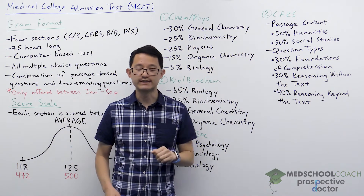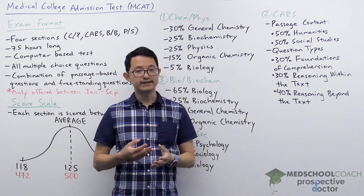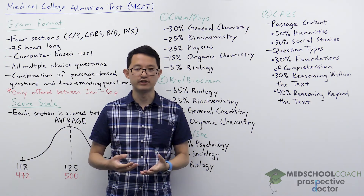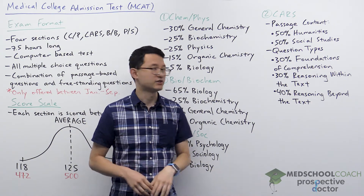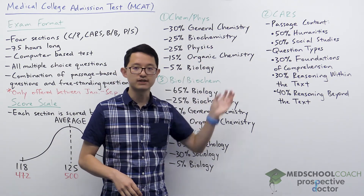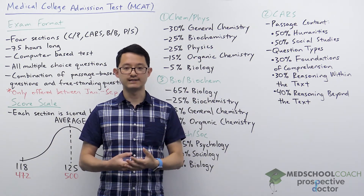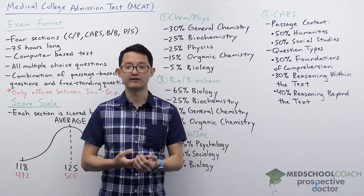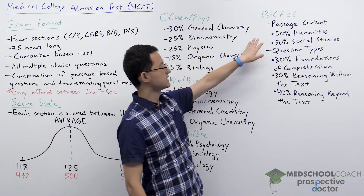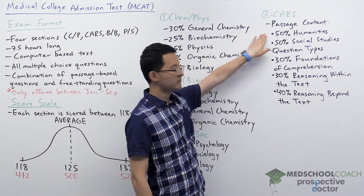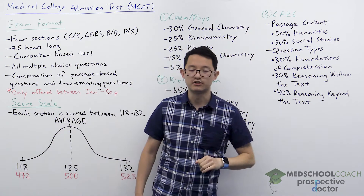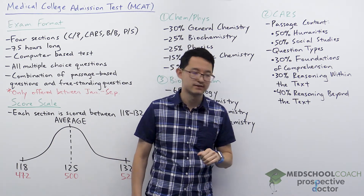The critical analysis and reasoning skills section, or CARS, is unique in that it doesn't test any prior knowledge of content. You don't need to know anything about the humanities or social studies — you're being tested purely on your critical analysis and reasoning skills. About half the passages are on humanities topics and half are on social studies topics.